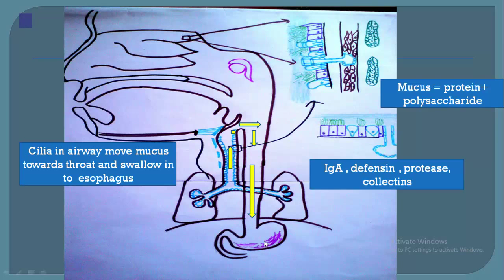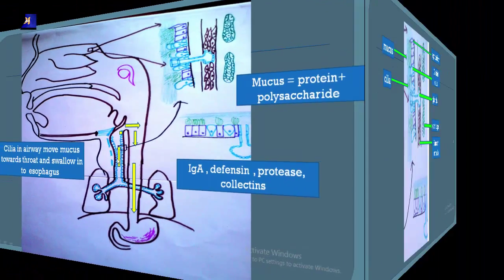Then, what are IgA, defensins, proteases, and collectins? These are different kinds of proteins acting against viruses. This is just a glimpse — we will move to further slides to appreciate these in detail.